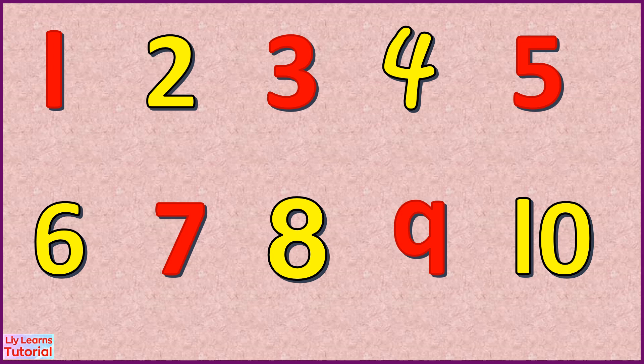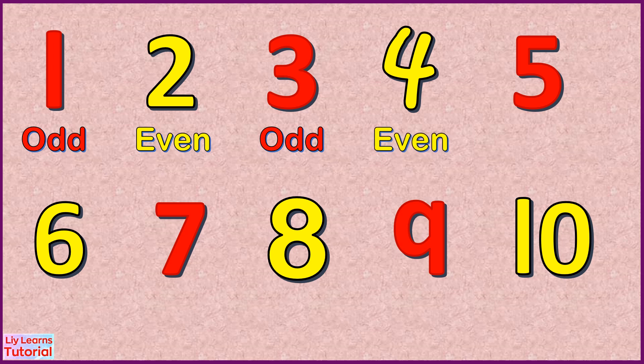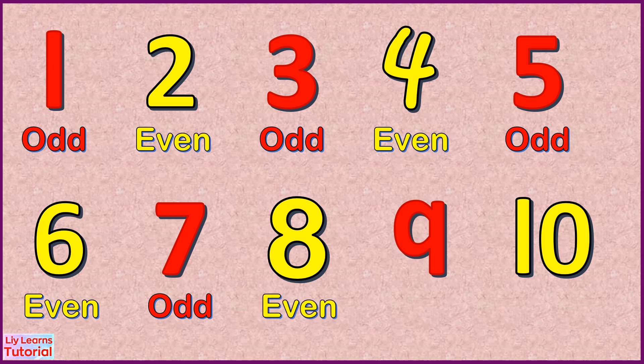Let's look at numbers one to ten. Starting from one, alternately the numbers are odd, even, odd, even, odd, even, odd, even, odd, even.